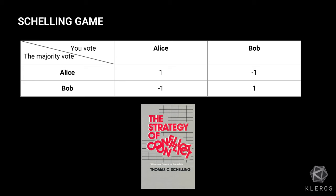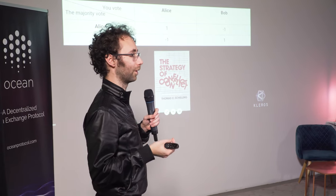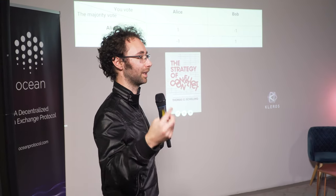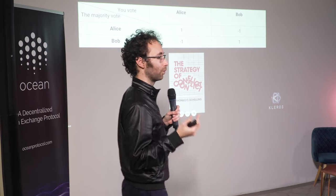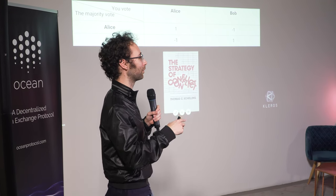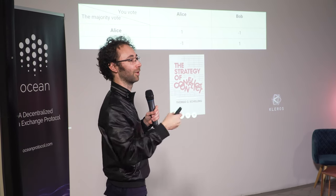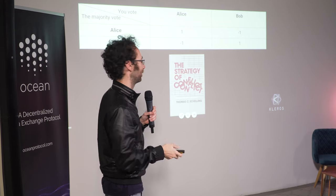You should vote for Bob if you expect other people to vote for Bob — and that's recursive. You vote for Bob because you expect people to vote for Bob because you expect them to expect others to vote for Bob. Experiments show people go up to three levels of expectation in practice.